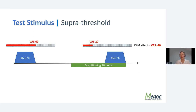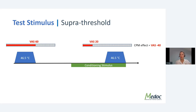VAS-60 is more often used than VAS-40. Using VAS-60 or VAS-40 is not by accident — if you use a lower VAS you'll encounter the floor effect, so you want to be a bit higher to see a CPM effect. For example, if we calibrate to a patient and find their pain-60 is at 46.5 degrees, we give that temperature, the patient rates their pain, then we introduce the conditioning stimulus and present the test stimulus again.